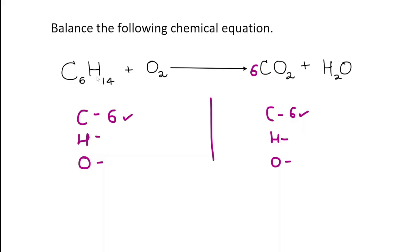And the hydrogen. On the left-hand side, we have 14 hydrogen atoms. The only compound with hydrogen is water. I need to put seven here because seven times two is 14. We have the correct number of hydrogen atoms. Carbon and hydrogen are all good.